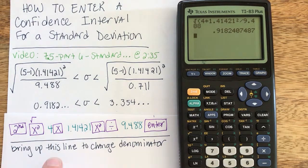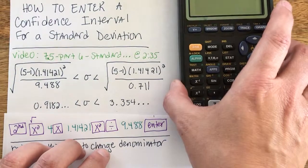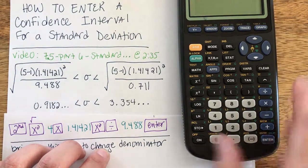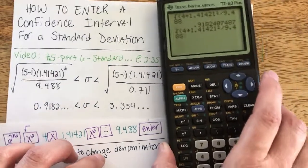On this calculator, instead of typing this all in again, I'm just going to bring up the line I just typed. Remember, on this calculator what I need to do is hit second and the enter button to get the entry that I just typed.